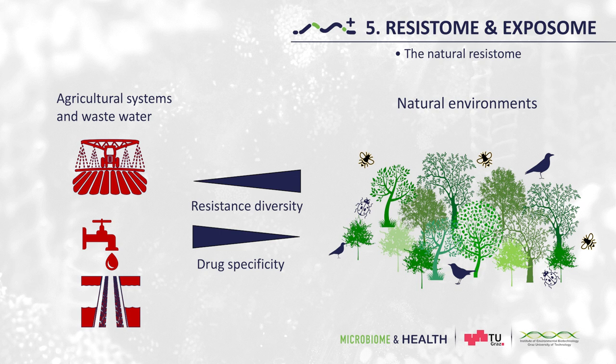Recent studies have also shown us that the use of certain chemicals common in agriculture can cause unwanted changes in natural resistomes — for example, in those of lichens that normally inhabit pristine environments. It is of utmost importance to limit exposure of natural environments to chemicals which trigger their resistomes.